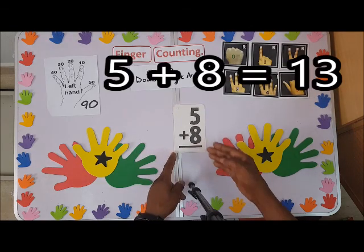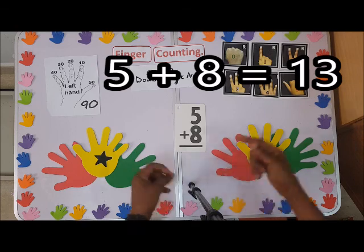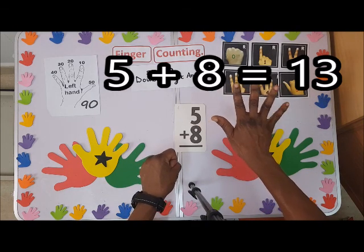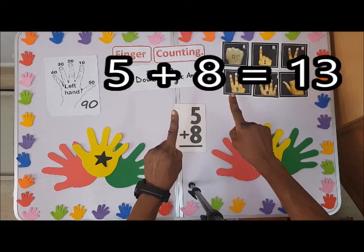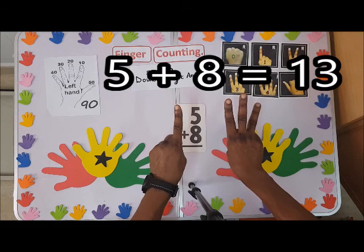We have five plus eight. Since eight is the larger number, I'll shoot on to eight. This is eight plus five: one, two, three, four, five. The answer is what? Thirteen. Thirteen.